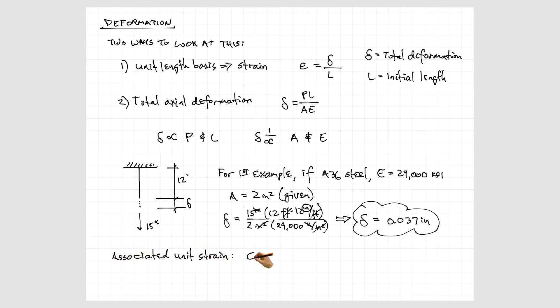The associated unit strain with that is that amount of deformation divided by the length, 12 feet long, multiply that by 12 inches per foot to get 144 inches, for a unit strain of 0.00026 inches per inch.